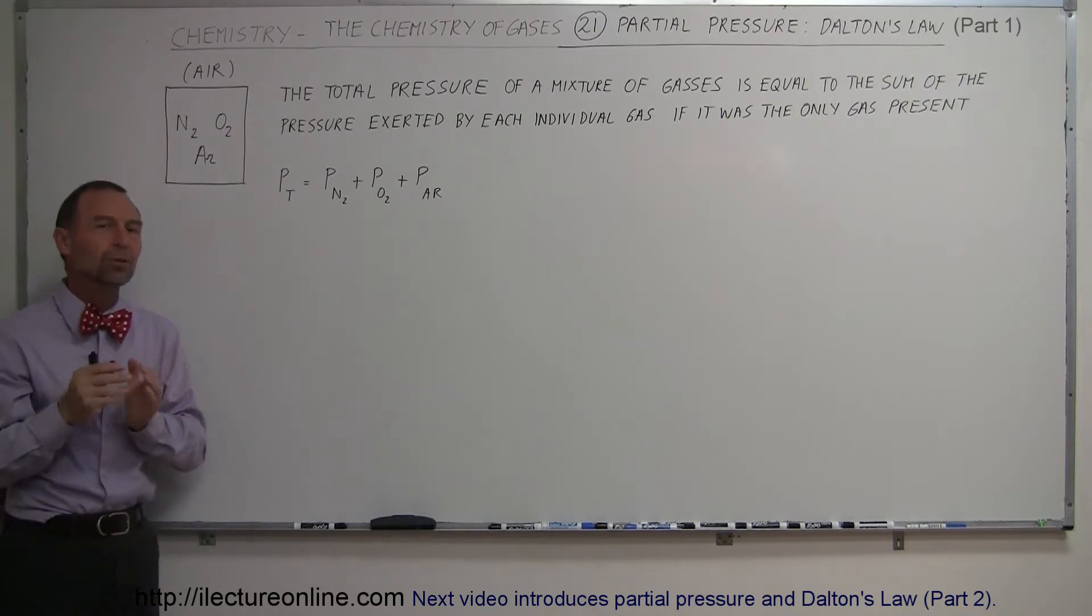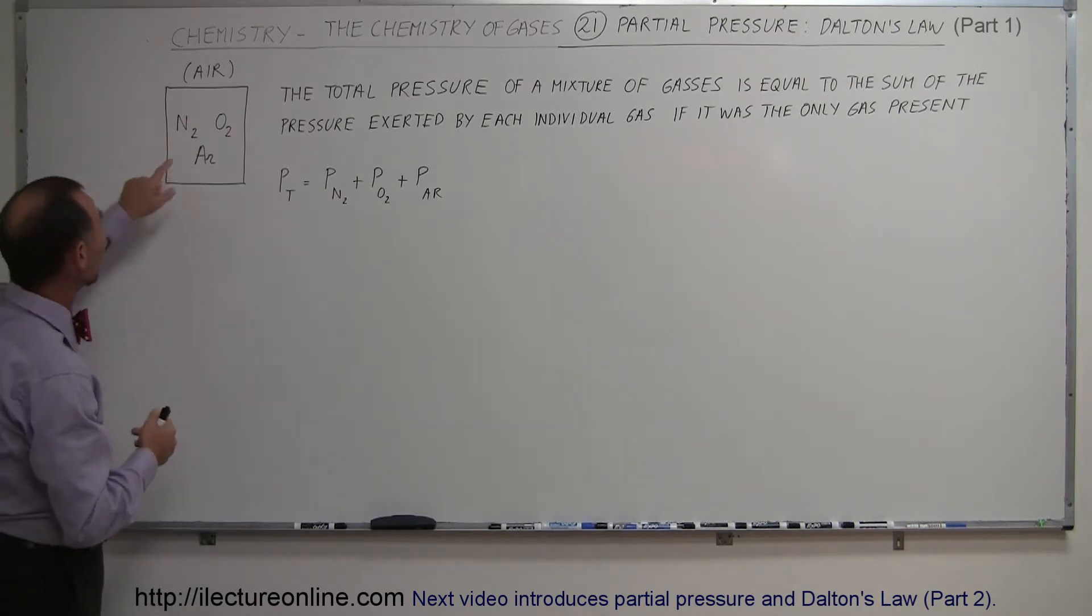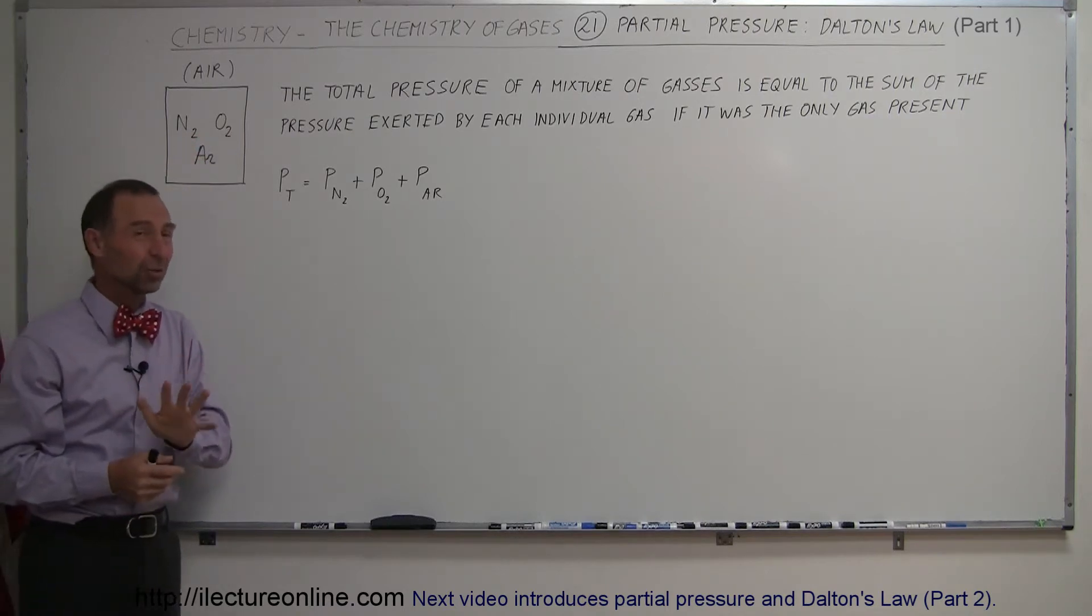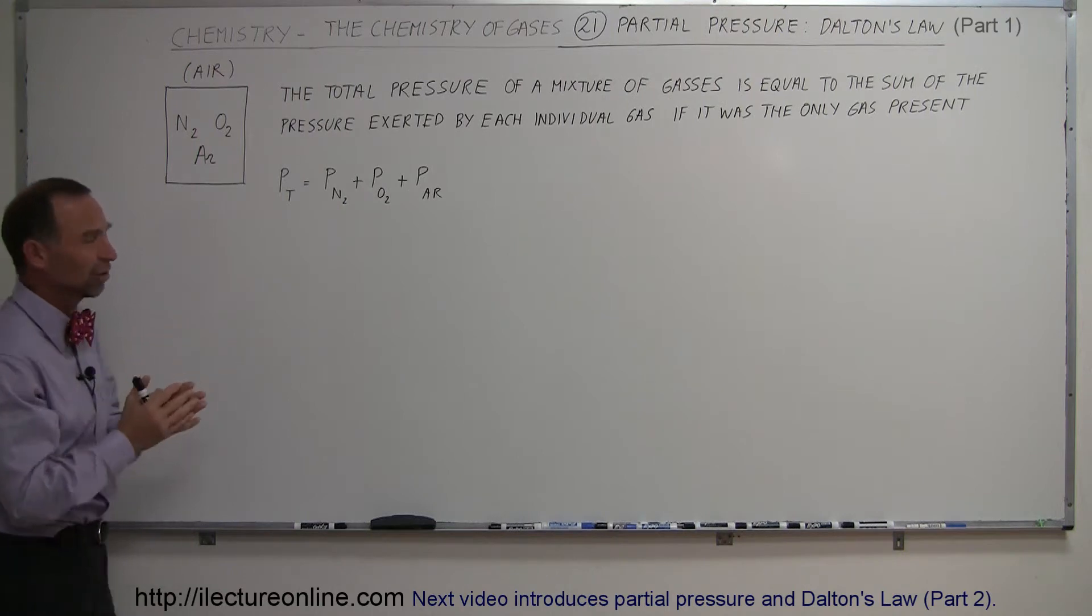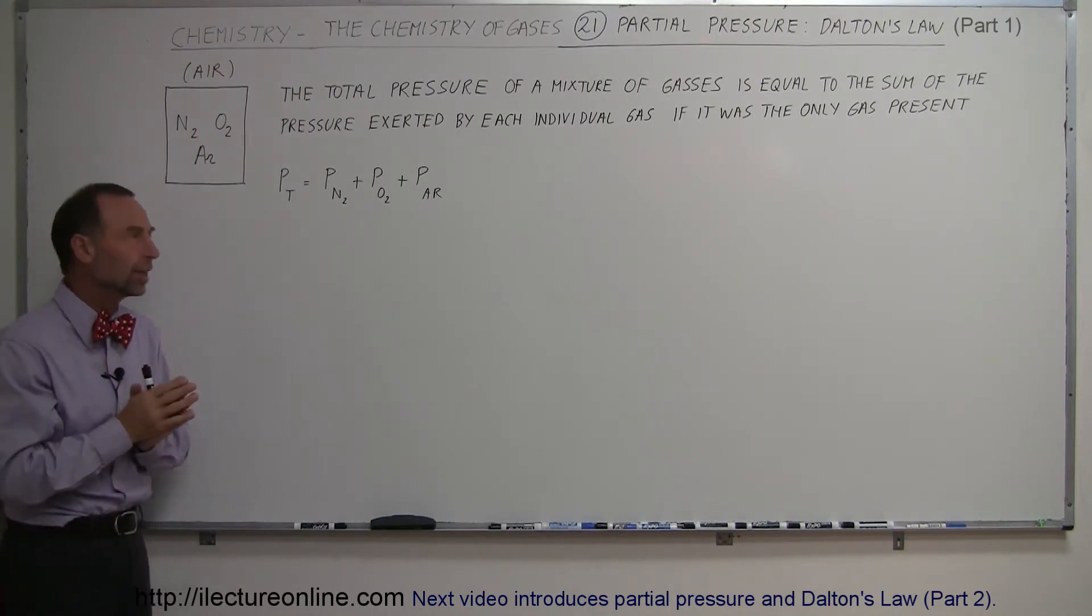The three most important constituents of dry air are nitrogen, oxygen, and argon. Carbon dioxide is actually number four below argon. So let's just take those three, and let's assume those are the only three components of the air.